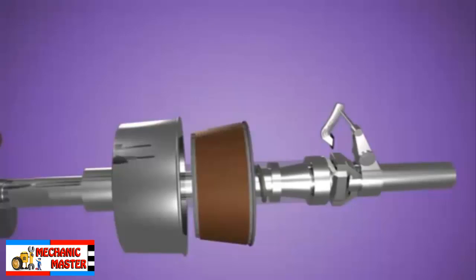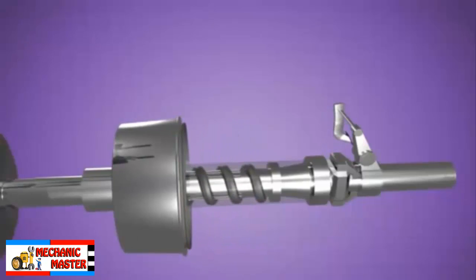The female cone is the clutch driving member which is connected to the crankshaft. Male cone slides on splines of the clutch shaft.